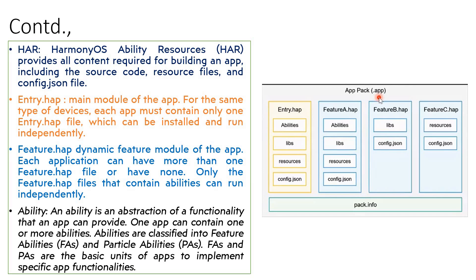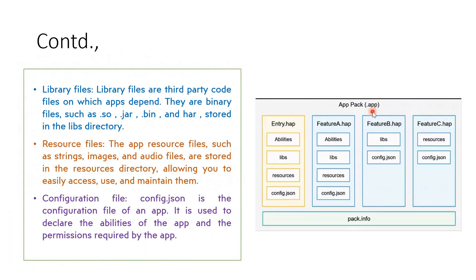So we have entry.hap, feature.hap, and you can have as many feature.hap files as you want. HAR is HarmonyOS Ability Resources, giving you the complete structure and content to build the app — source code, resource files, and config.json. The next thing to learn is library files. Library files could be third-party code your app depends on. They are binary files: .so, .jar, .bin, and .har are all stored in the library category.